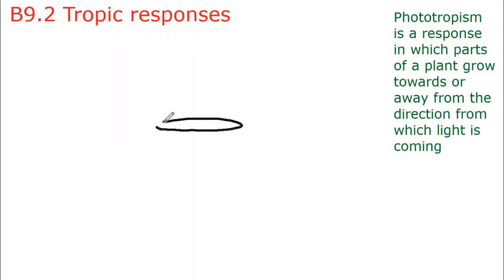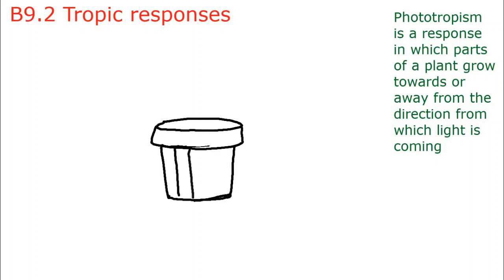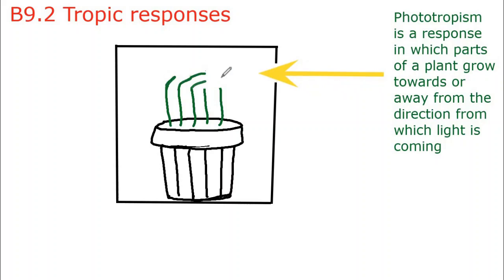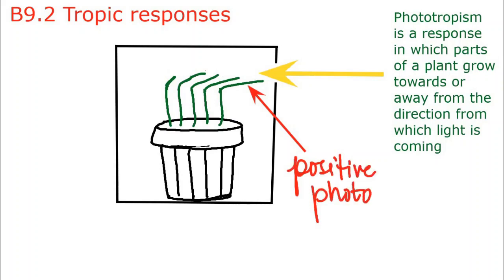Phototropism can also be investigated by growing a plant until small seedlings appear, then placing the plant in a customized wooden box with a cutout at one end as the only source of light for the seedlings. After a couple of days, once the box is removed, it can be seen that the plant shoots have started bending towards the light, showing positive phototropism. This experiment proves that light is the stimulus which causes shoots to grow in the direction from where the light is coming.